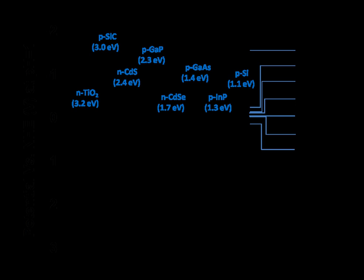Photoelectrochemical reduction of CO2 is a chemical process whereby carbon dioxide is reduced to carbon monoxide or hydrocarbons by the energy of incident light. This process needs to be catalyzed either homogeneously or heterogeneously in order to proceed, and current research is aimed at developing these catalysts, most of which are semiconducting materials.